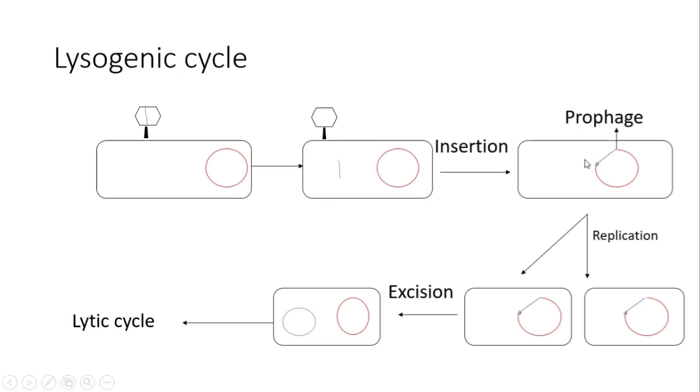This integrated phage DNA is called a prophage. Every time the host cell divides, this viral DNA also gets replicated along with the bacterial genome and is transferred to the progeny cells.